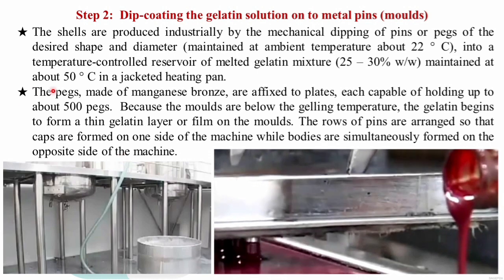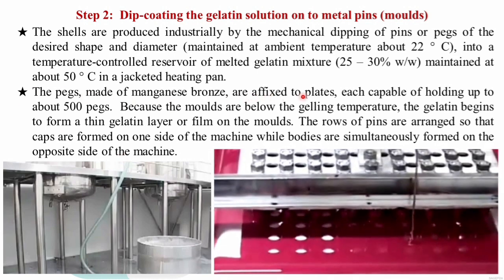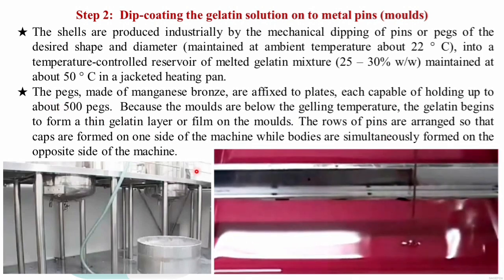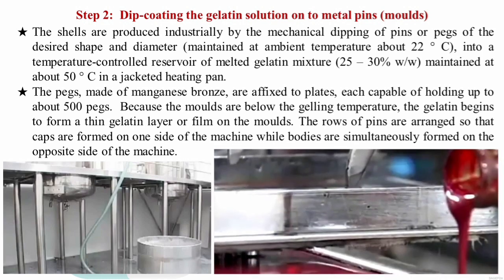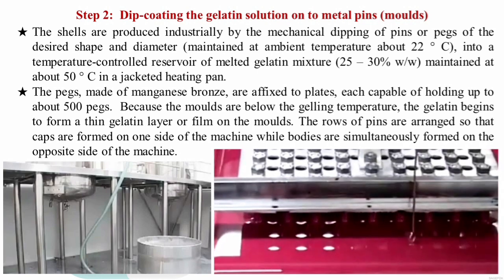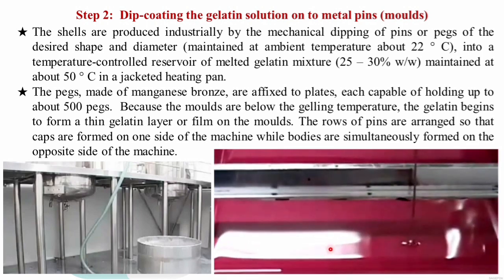Because the molds are below the gelling temperature of the gelatin, when they are dipped in the gelatin solution, the gelatin forms a thin layer over the molds. The rows of pins are arranged so that caps are formed on one side of the machine and bodies are formed simultaneously on the opposite side. This gelatin solution is continuously fed from the dipping machine into the dipping dishes.